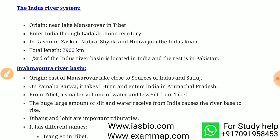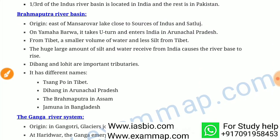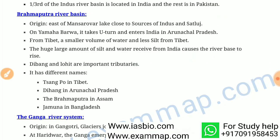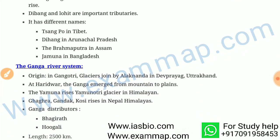The Brahmaputra river basin has its origin east of Mansarovar lake, close to the sources of the Indus and Satluj. At Namcha Barwa it takes a U-turn and enters India in Arunachal Pradesh from Tibet, carrying a smaller volume of water and less silt from Tibet. The huge amount of silt and water received from India causes the river basin to rise. Dibang and Lohit are important tributaries. It has different names: Tsangpo in Tibet, Dihang in Arunachal Pradesh, Brahmaputra in Assam, and Jamuna in Bangladesh.